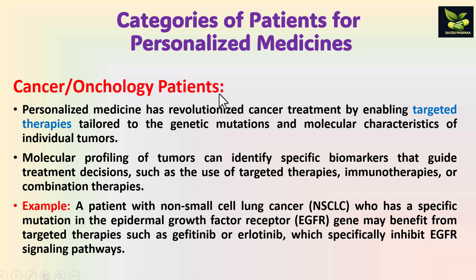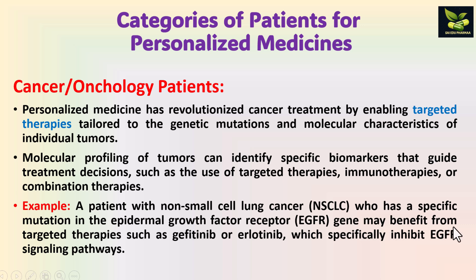Next are cancer or oncology patients. For these patients, variants can be properly identified and targeted therapies can be achieved. Genetic mutations and molecular characteristics of individual tumors are assessed through molecular profiling, which identifies specific biomarkers that guide treatment decisions — such as targeted therapies, immunotherapies, or combination therapies. For example, a patient with non-small cell lung cancer who has a specific mutation in the epidermal growth factor receptor (EGFR) gene may benefit from targeted therapies such as gefitinib or erlotinib, which specifically inhibit EGFR signaling pathways.